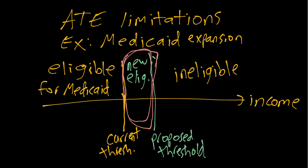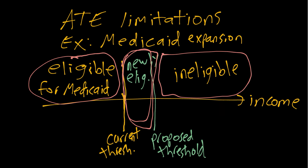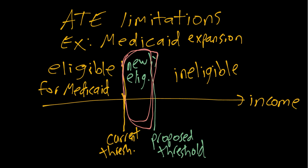The policy is not going to change anything about people who were already eligible, and it won't change anything for the large number of people who will just be ineligible regardless of the policy change. We don't care about the effect of Medicaid for people who are always ineligible — we only care about this little slice in the middle, those on the margin whose eligibility will be affected by the hypothetical policy change.